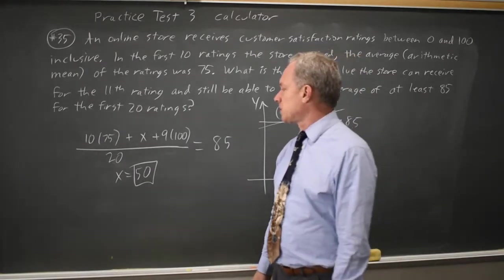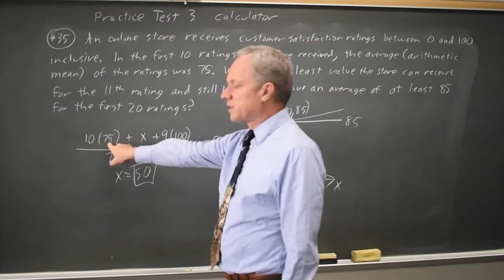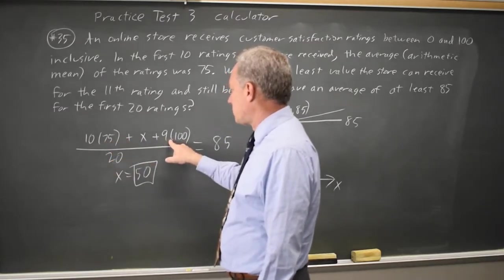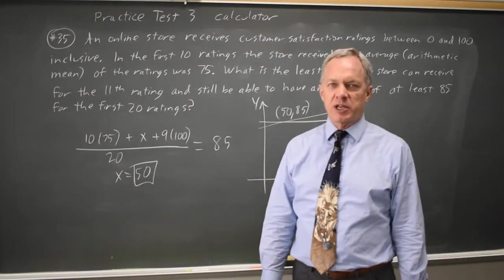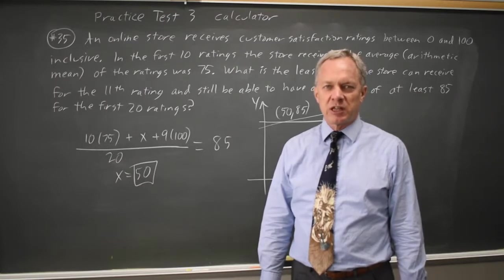I could do this by hand. Multiply both sides by 20, then subtract 10 times 75, which is 750, from both sides. Subtract 9 times 100, which is 900, from both sides, and I'll get X equals 50, the same answer. But I prefer solving equations on the calculator if I only have one variable left.